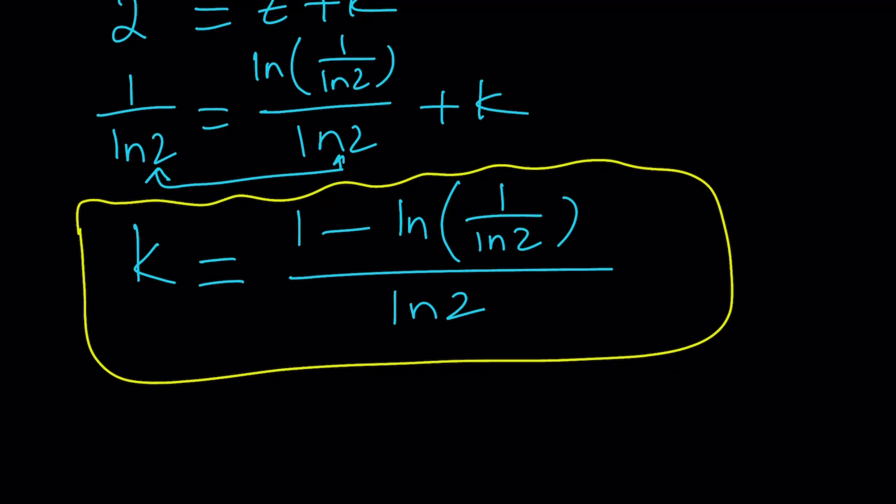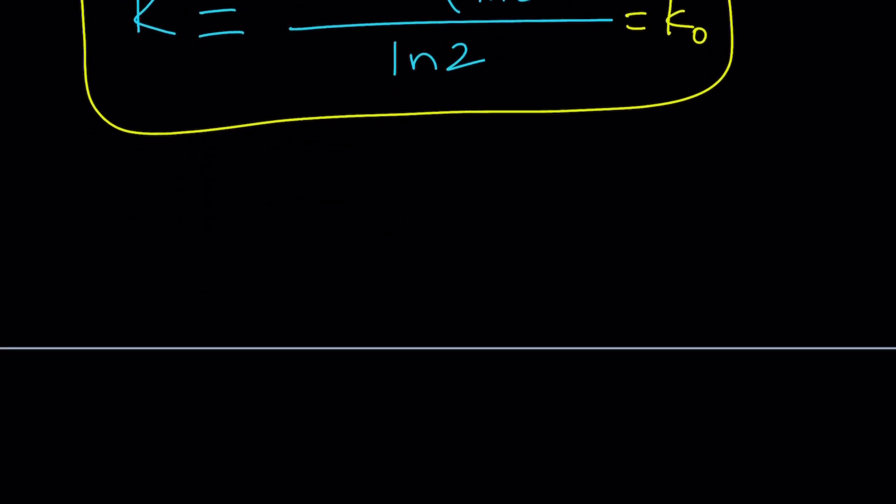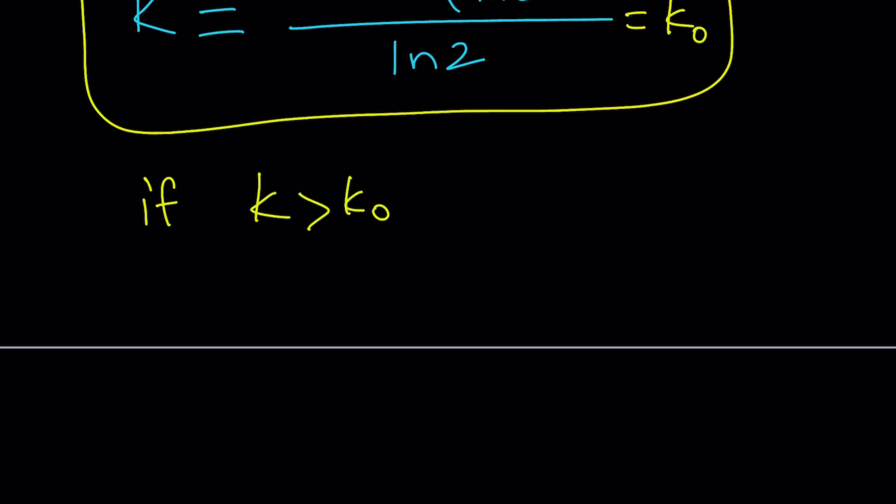I mean, you can do it, but I'm just going to leave it at that because this is fine. And now we can call this k sub zero. It's the particular k value because k is kind of like a variable. It's going to vary. Now, here's the thing. If k is greater than k sub zero, and you can play with this like I said earlier, we're going to get two solutions because the line is going to go up. If k is less than k sub zero, then we have no solutions.